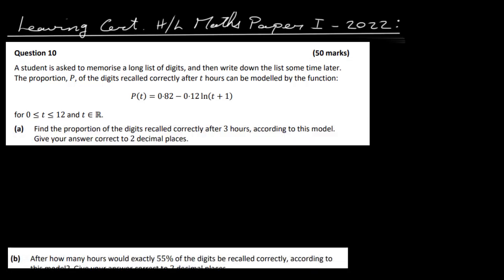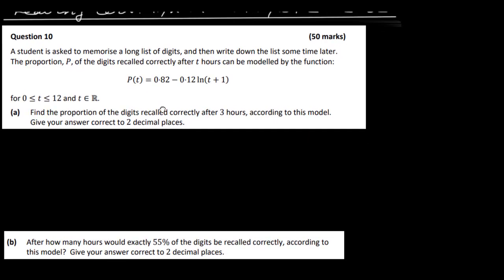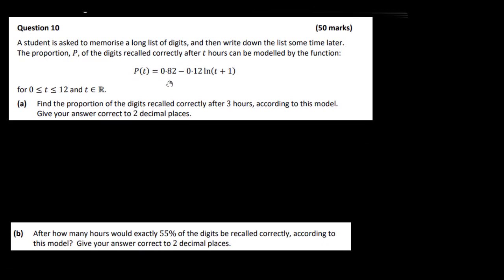This is the Leaving Cert Higher Level Maths Paper 1, 2022, Question 10. A student is asked to memorize a long list of digits and then write down the list sometime later. The proportion p of the digits recalled correctly after t hours can be modeled by the function p(t) = 0.82 − 0.12 log(t + 1), where t is between 0 and 12 hours. Find the proportion of digits recalled correctly after 3 hours according to the model.